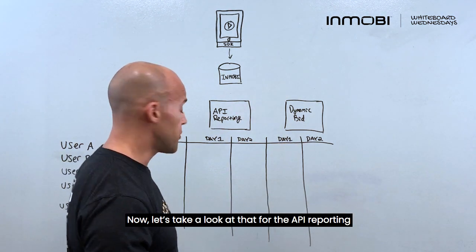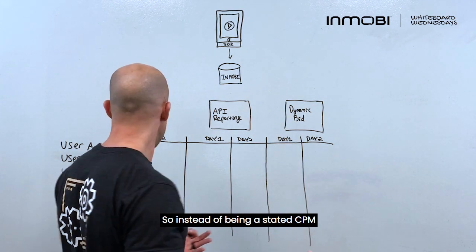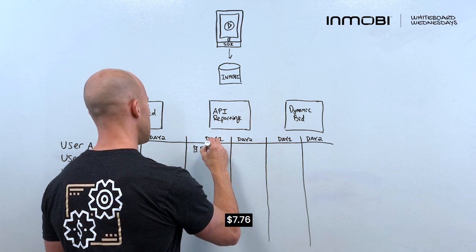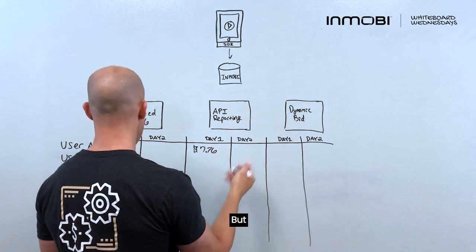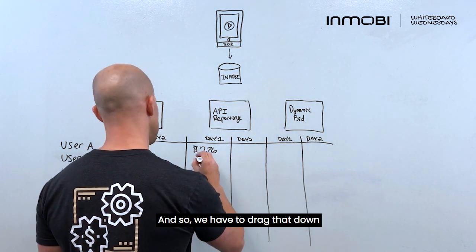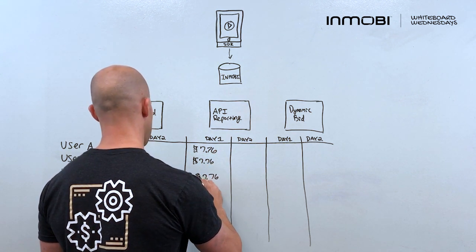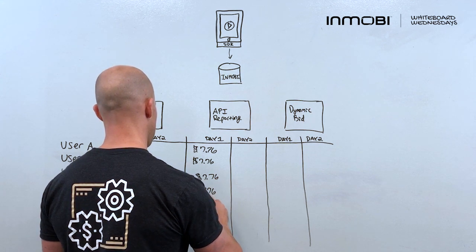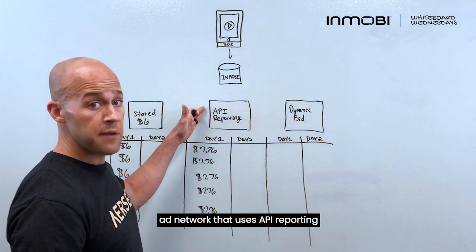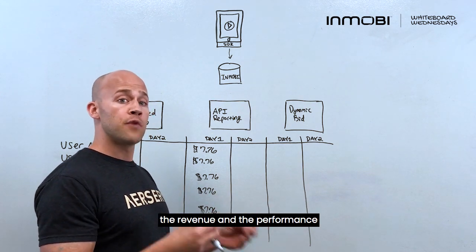Now let's look at API reporting. We're going to be pulling back the actual revenue — the actual CPM that you're generating from that ad network. So instead of it being a stated CPM, maybe for day one it's $7.76. But that same number is going to be used across all those different auctions. An ad network that uses API reporting has a chance to be more competitive because we can get more accurate data about the revenue and the performance.